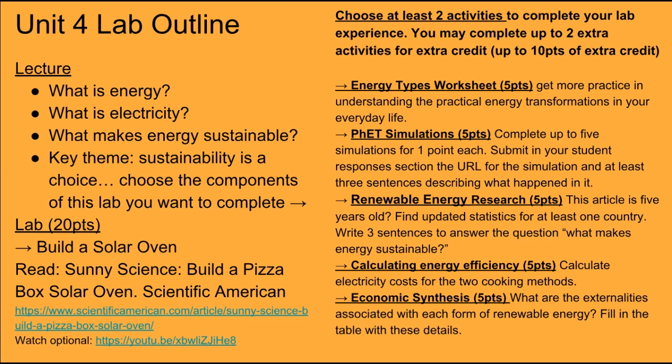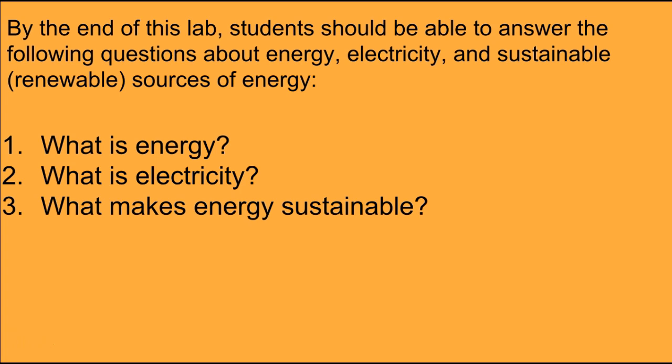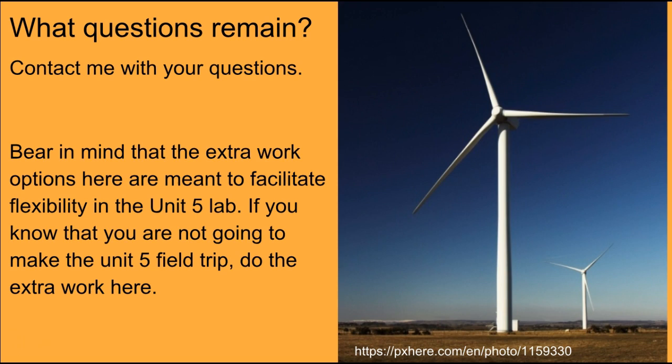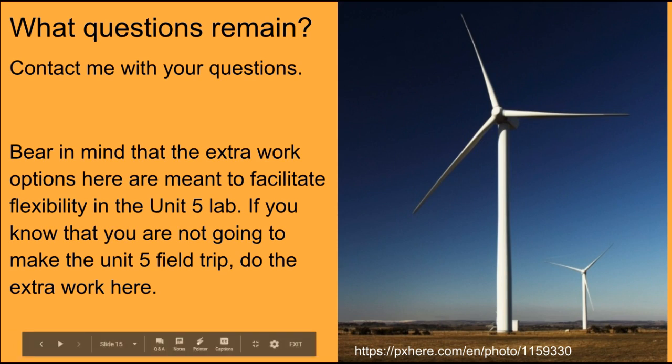In this lab I've given you lots of options. You need to build a solar oven, but you also have five different options — choose two of five activities to round out your education in this unit. If you feel you will absolutely not be able to make it to the field trip in unit five, I urge you to complete an extra two activities, and I will afford the rest of those points through an alternate lab for that unit. By the end of this lab you should be able to answer: what is energy, what is electricity, and what makes energy sustainable? Finally, contact me with any questions and discuss it in class. Thank you very much — I hope you enjoyed this learning experience, and I look forward to talking to you in class.